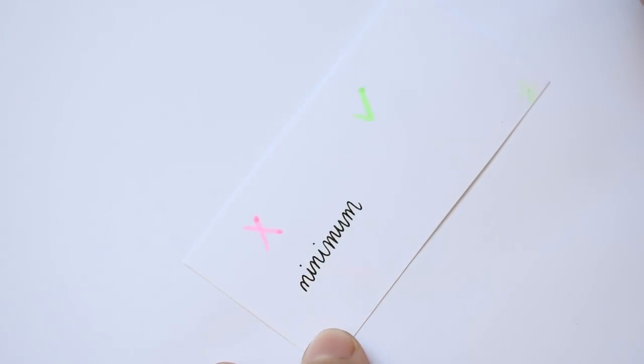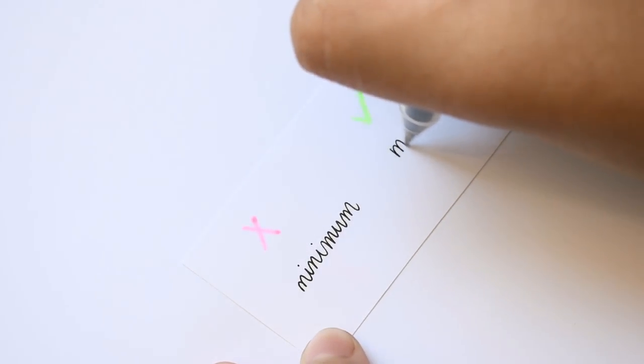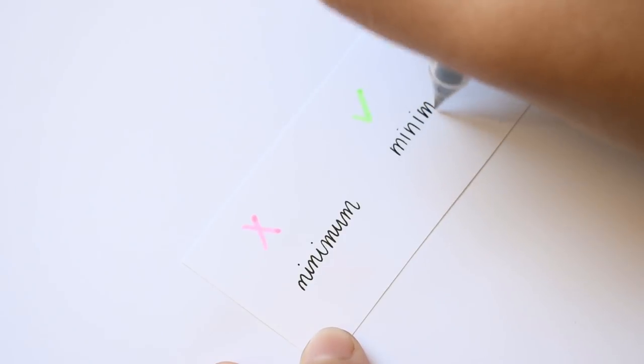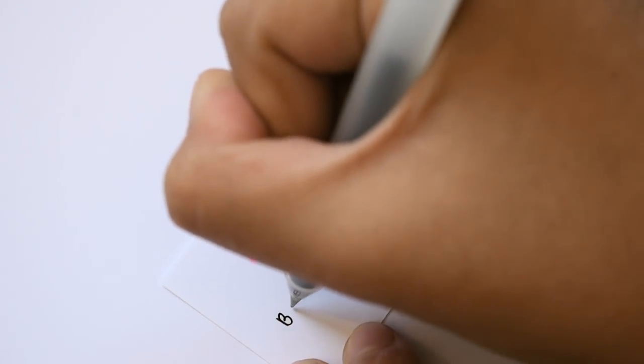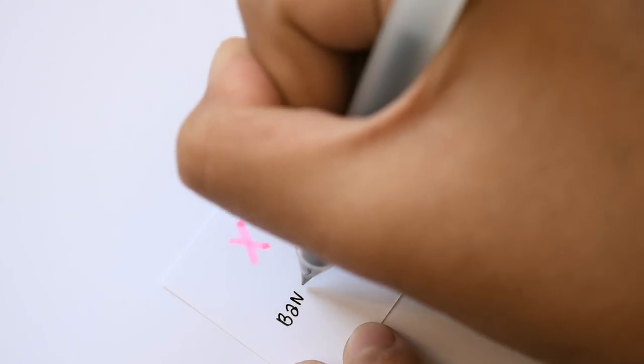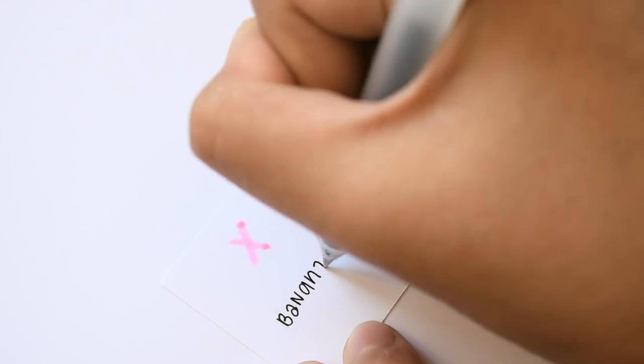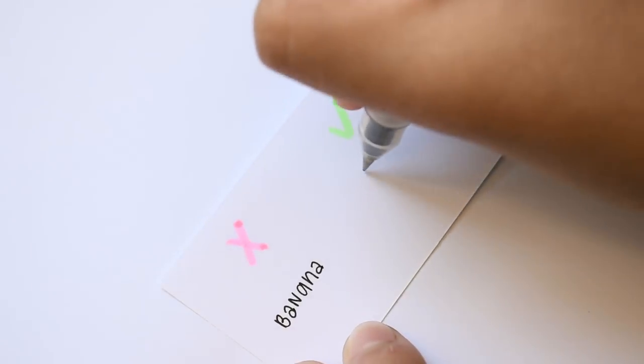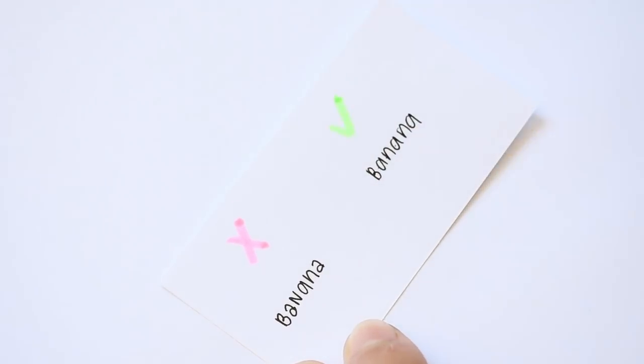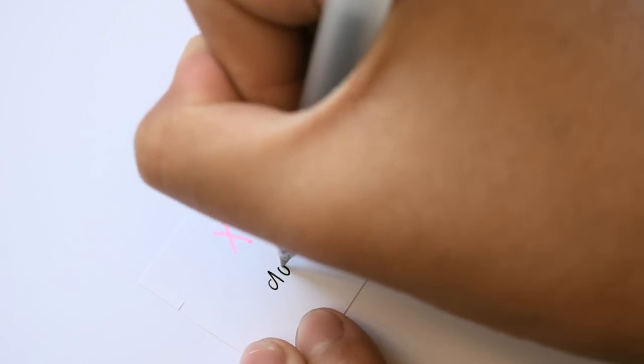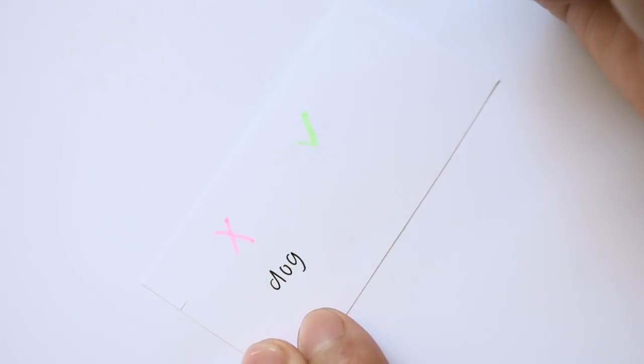Number four, write in print instead of cursive. Number five, use the same letter forms throughout. And number six, close all of the loops.